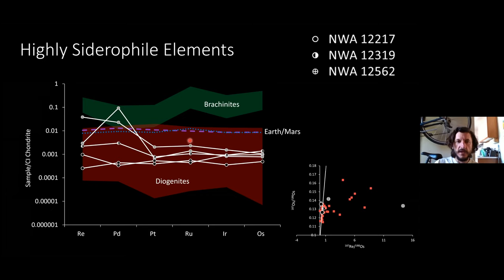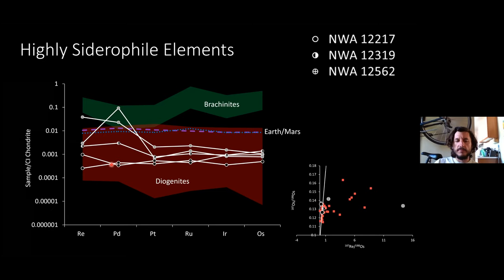Earth, Mars, and the diogenites are relatively high in highly siderophile elements, suggesting that after core-mantle segregation, a late veneer of chondritic material replenished the HSE concentrations in these bodies. That's also suggested for these new meteorites — they're from a body that experienced core-mantle differentiation, then HSEs were replenished to chondritic abundances by the late veneer. Without the late veneer, you'd have a non-chondritic abundance of these materials.